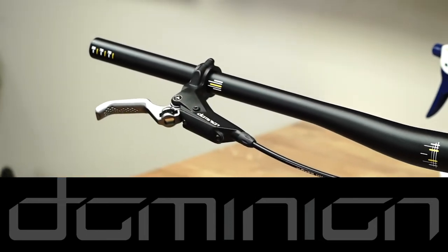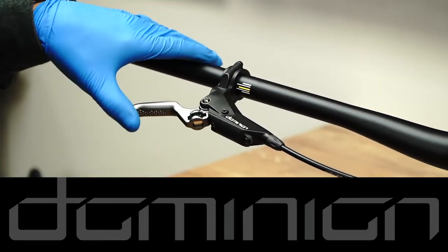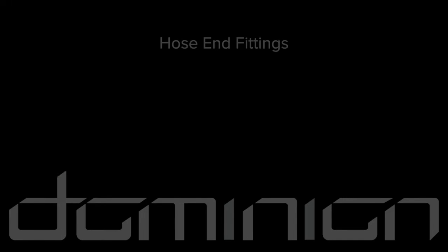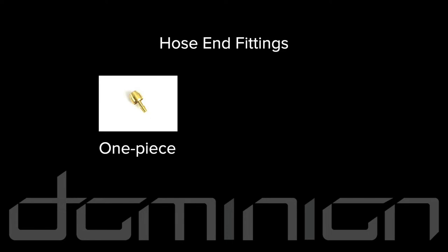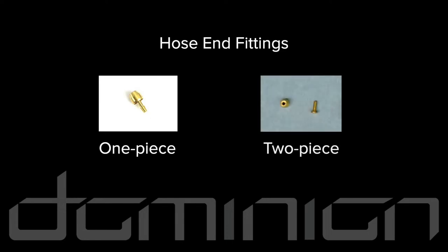For Hayes Dominion, always cut the hose from the end nearest to the master cylinder. There are two types of hose end fittings. A one-piece fitting is installed at the factory and in older service kits. Two-piece fittings are provided in newer service kits.